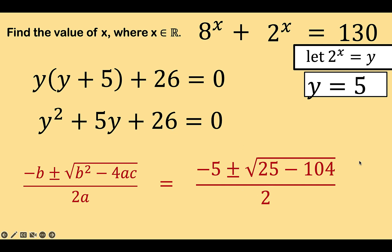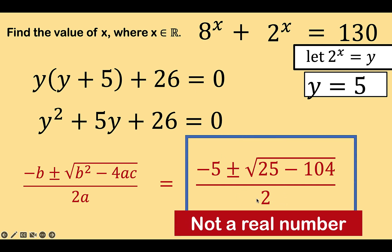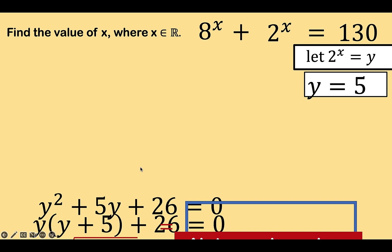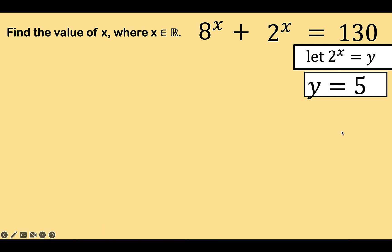And notice that under this square root symbol, we have 25 minus 104, which is equal to a negative number, negative 79. That means this value is not a real number. But we require that x be an element of the set of real numbers. Therefore, since this is not a real number, then the solution to this entire equation will not be a part of our solution. So, let's remove it. We are now left with these two values.